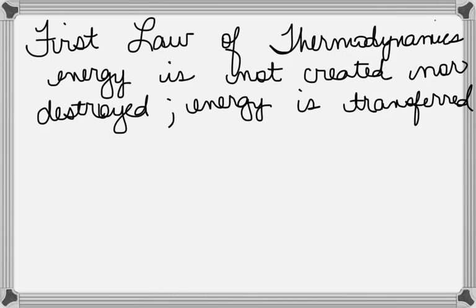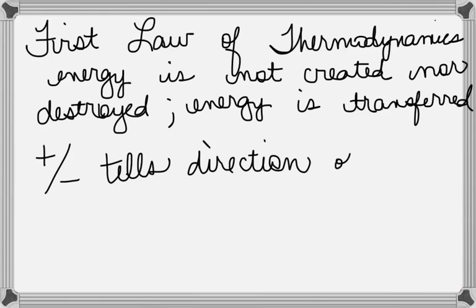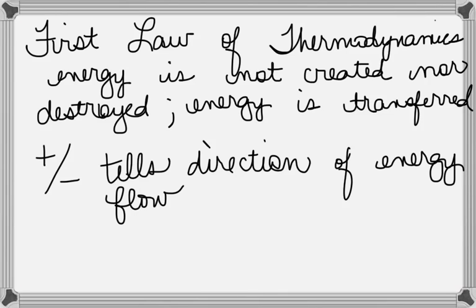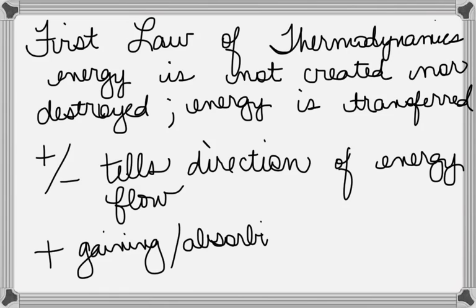When we're dealing with energy being transferred, we use signs of positive and negative to designate the direction of the flow of energy. So the positive and negative tells the direction of the energy flow. We use a positive to say something is gaining or absorbing energy. And what would the negative then be? Releasing energy.